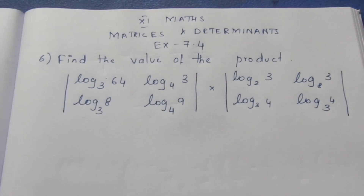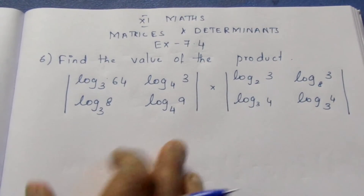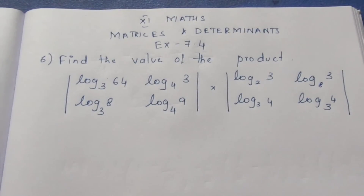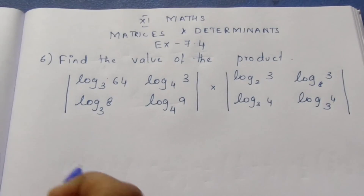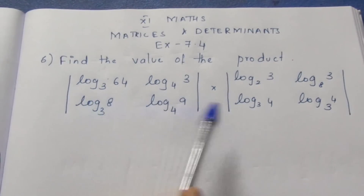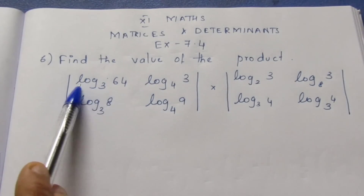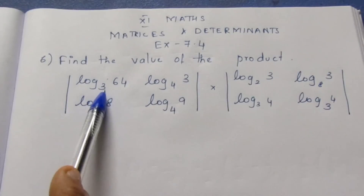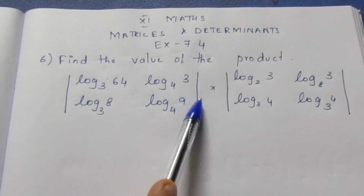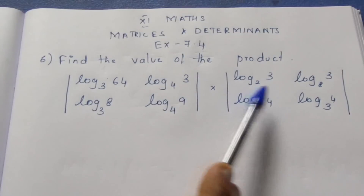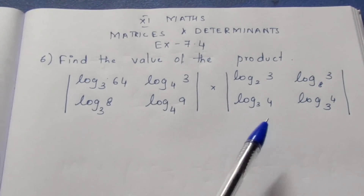Find the value of the product. We can multiply the value of the product using log properties. We can use log 64 base 3, log 3 base 4, log 8 base 3, log 9 base 4 — note determinants — into log 3 base 2, log 3 base 8, log 4 base 3, log 4 base 3.